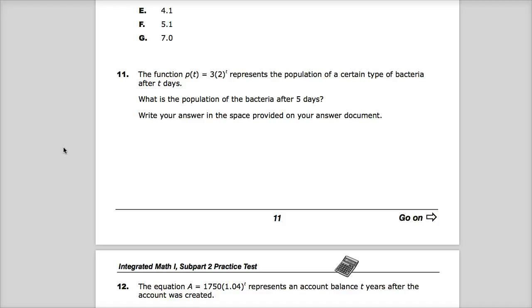The question says the function p(t) = 3 × 2^t, so this is a geometric situation. It represents the population of a certain type of bacteria after t days, or exponential, I should say.